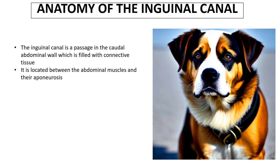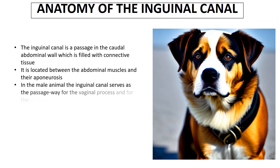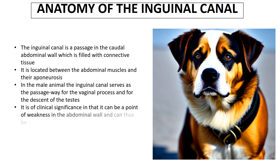In the other video we saw what muscles are called abdominal muscles and had a look at their various attributes and anatomical descriptions. In the male animal the inguinal canal serves as the passageway for the vaginal process and the descent of the testis. It is of clinical significance in that this particular canal can be a point of weakness in the abdominal wall, making it a common site of herniations.